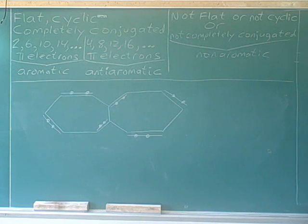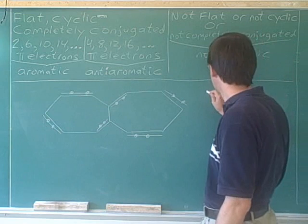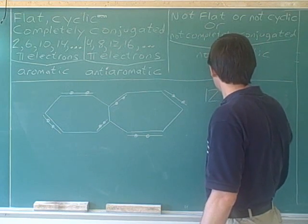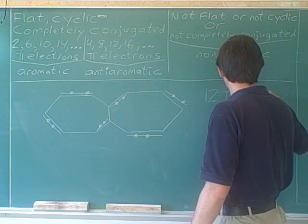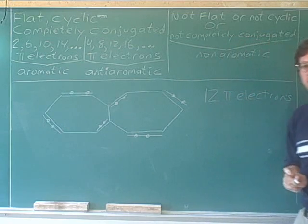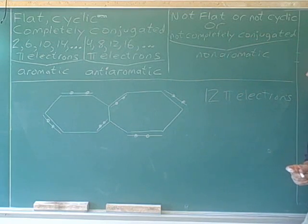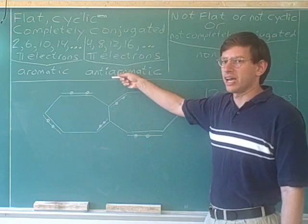We just counted 12 pi electrons. 6 pi bonds gave us 12 pi electrons total, which would make the molecule anti-aromatic.